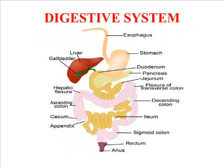The digestive system starts from the mouth to the anus. It has different parts and different components with their respective differences in their work. The digestive system is basically composed of the oral cavity,